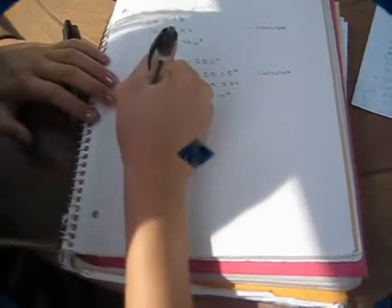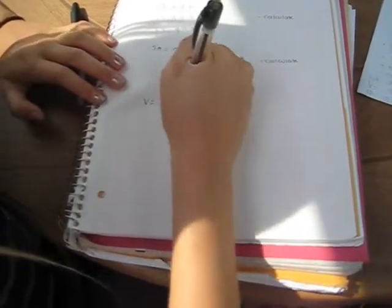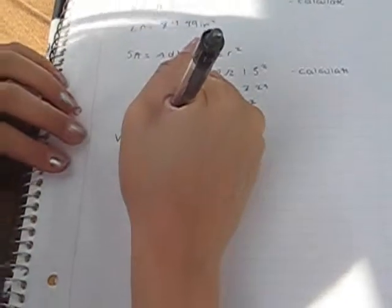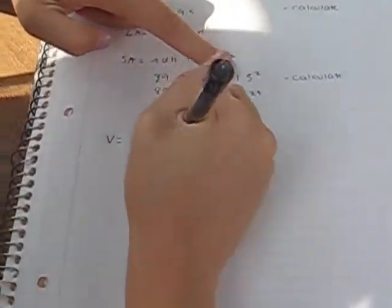To find the volume of the cylinder, it is pi radius squared times height. Since you already know the radius, you plug in 1.5 squared.